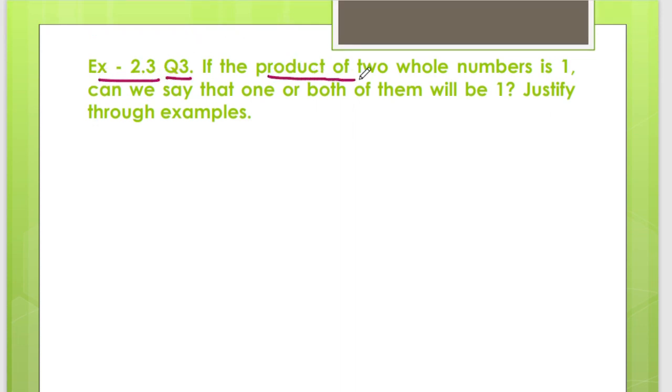If the product of 2 whole numbers is 1, can we say that 1 or both of them will be 1? If we multiply 2 whole numbers and our answer is 1.